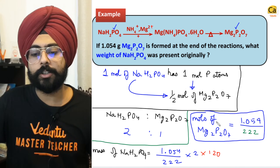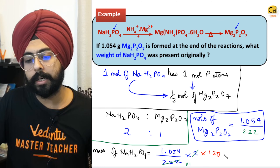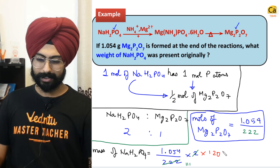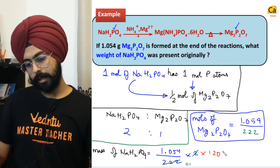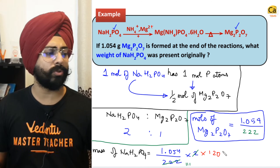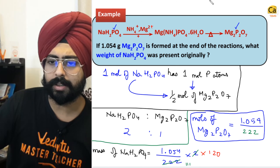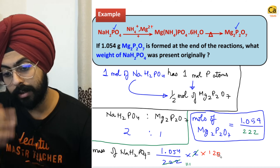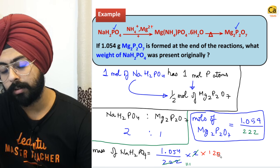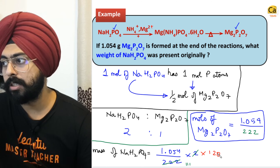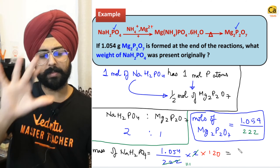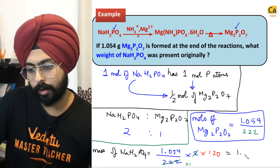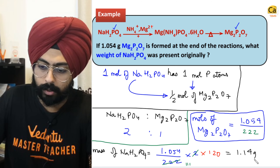This calculation gives 1.054 × 120 ÷ 111, which is approximately 1.1. The exact answer from the answer key is 1.139 grams, or 1.14 grams. Very simple idea — you have to conserve the phosphorus atom, which you must choose very carefully.